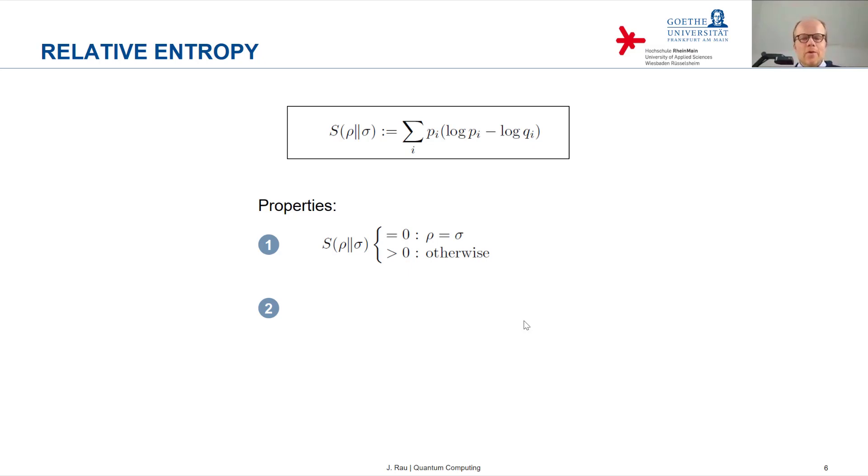You can also show that the larger the differences between the two distributions, the larger the relative entropy. Qualitatively speaking, you can cast this in more precise mathematical language, but it turns out that the relative entropy is a very good measure for the difference between two probability distributions. The more they differ, the more they deviate from each other, the larger their relative entropy. So it's a kind of distance measure between probability distributions.